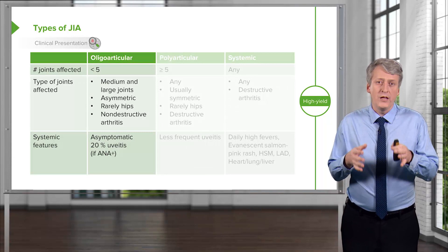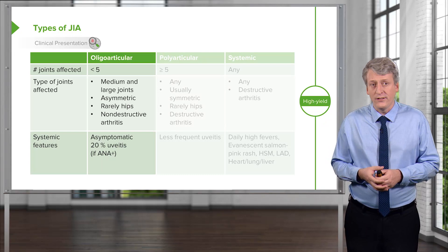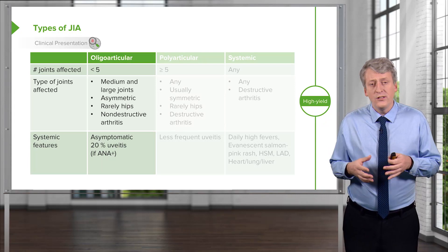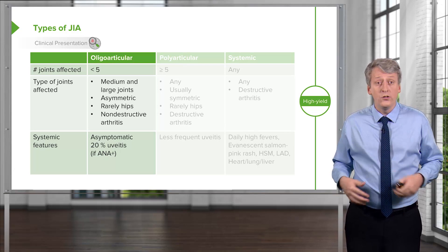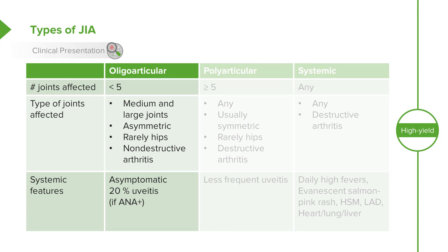Oligoarticular JIA usually affects fewer than five or six joints, typically medium and large joints. The disease tends to be asymmetric and rarely involves the hips. This tends to be a non-destructive arthritis with no systemic features — these children are afebrile and otherwise doing well. However, if the child is ANA positive, they are more likely to have uveitis about 20% of the time; ANA negative patients are less likely to develop it.